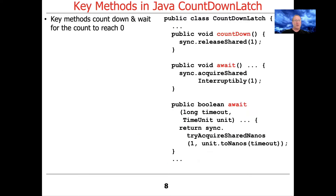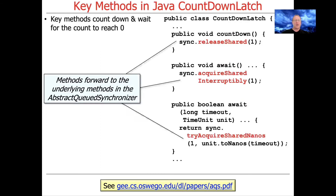The key methods are Countdown and Await. Countdown counts down, hence the name, and Await waits for the count to reach zero. Under the hood, both methods simply forward to the underlying AbstractQueuedSynchronizer framework. Countdown calls sync release shared, decrementing by one and releasing threads if it reaches zero. Await calls methods like acquire shared interruptibly and try acquire shared nanos.